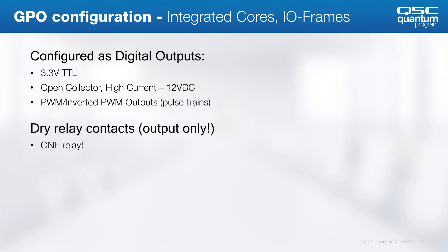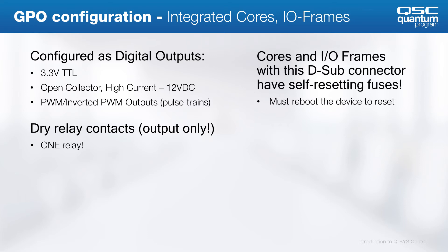There is one dry relay per DA15 connector. Because the Core 110 doesn't have a DA15 connector, you will need to provide an external relay on a different device and then use the Core's GPIO digital output voltage to trigger it from the Core 110. One important thing to note is all of these connections have a resettable fuse. If you accidentally use too much current on a given output and it seems to stop working altogether, you can always reboot the Core to reset the fuse.